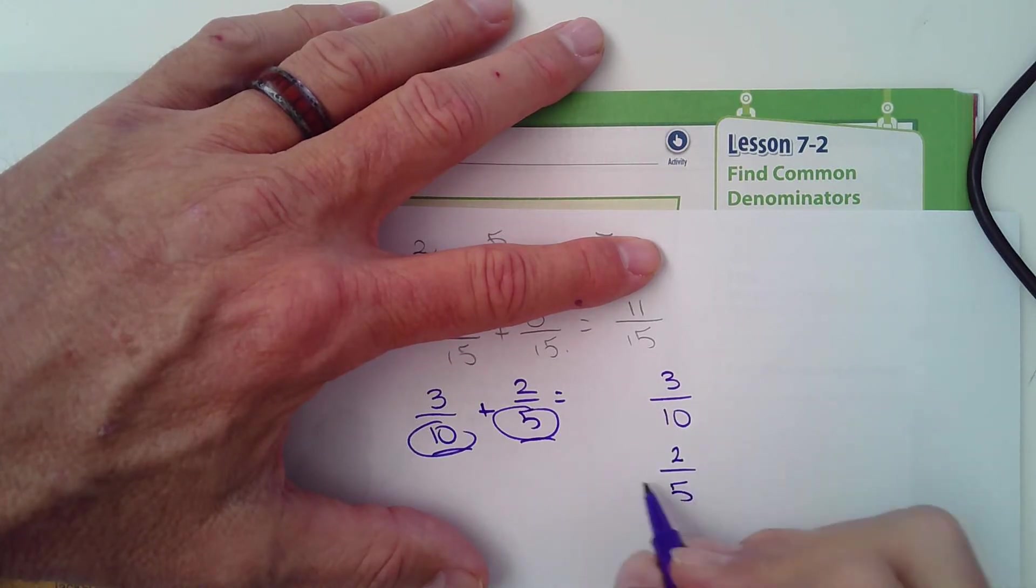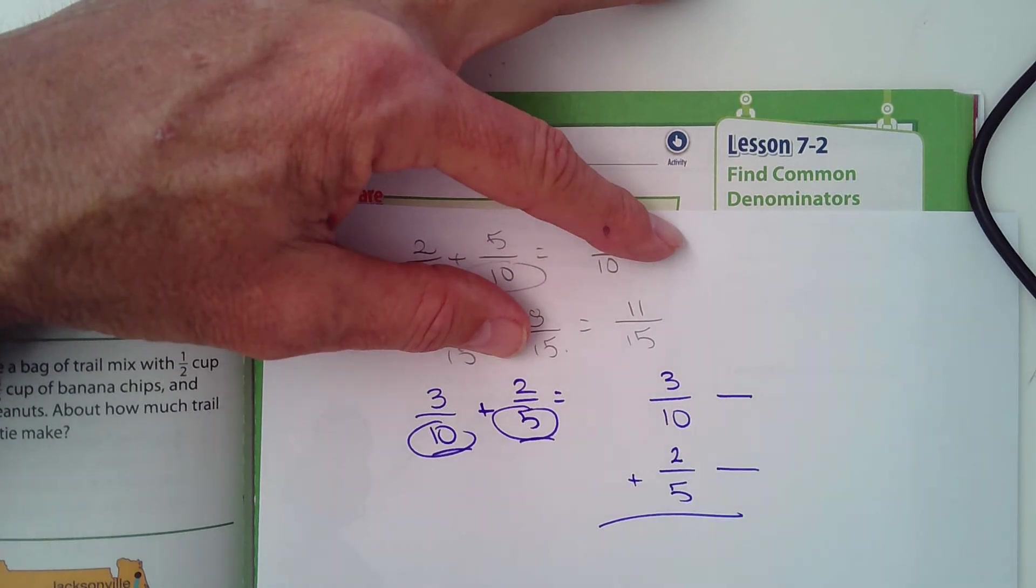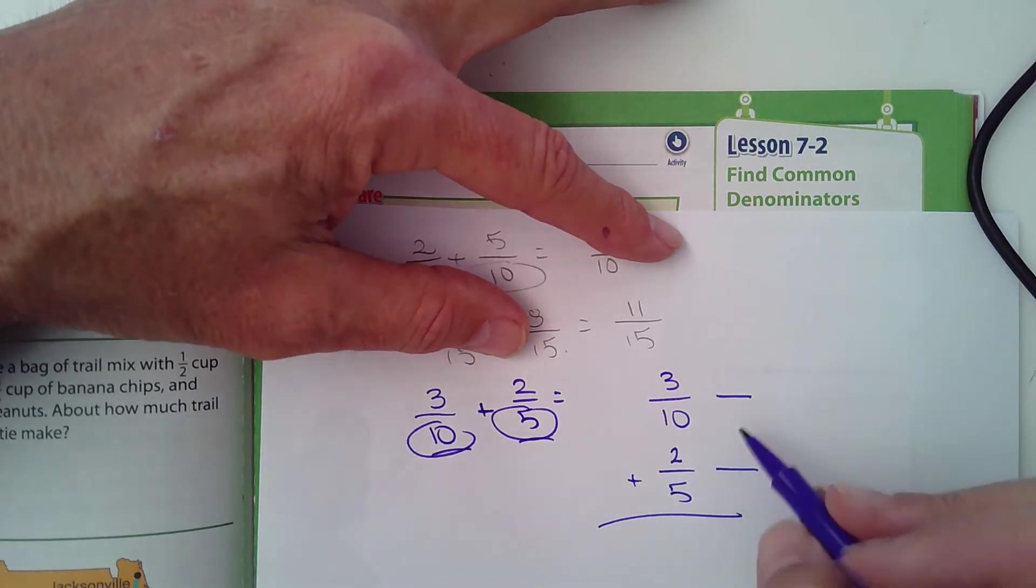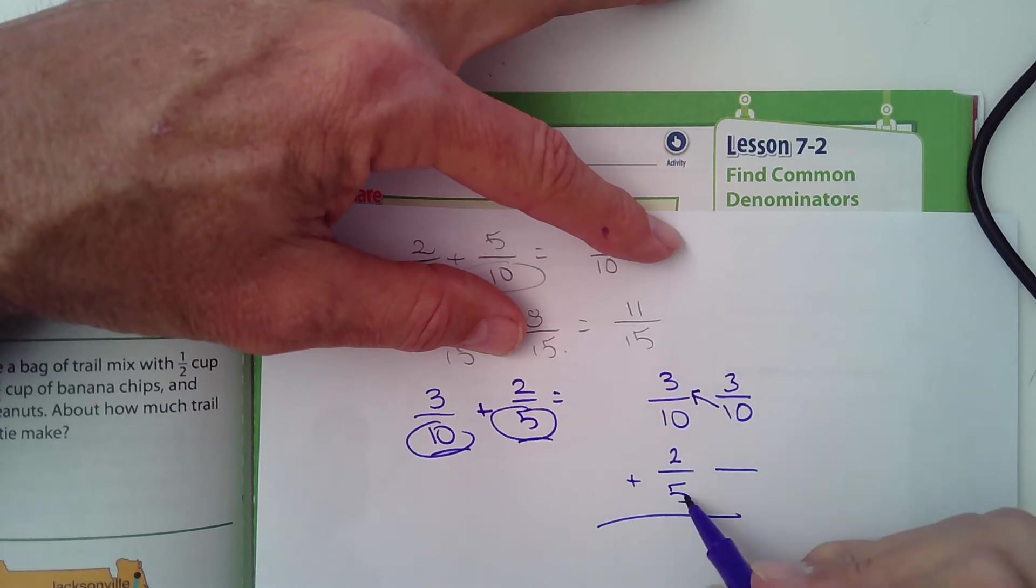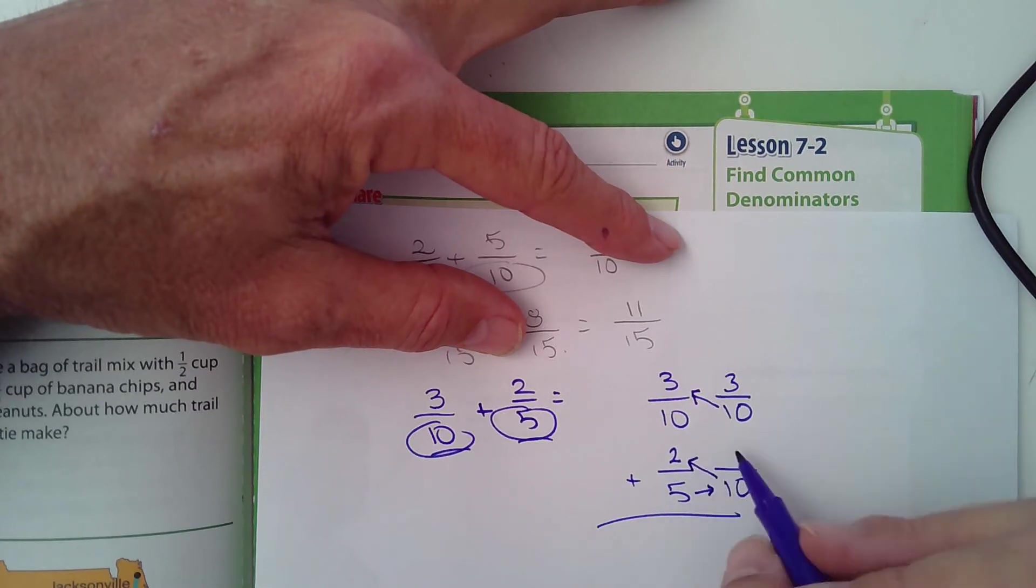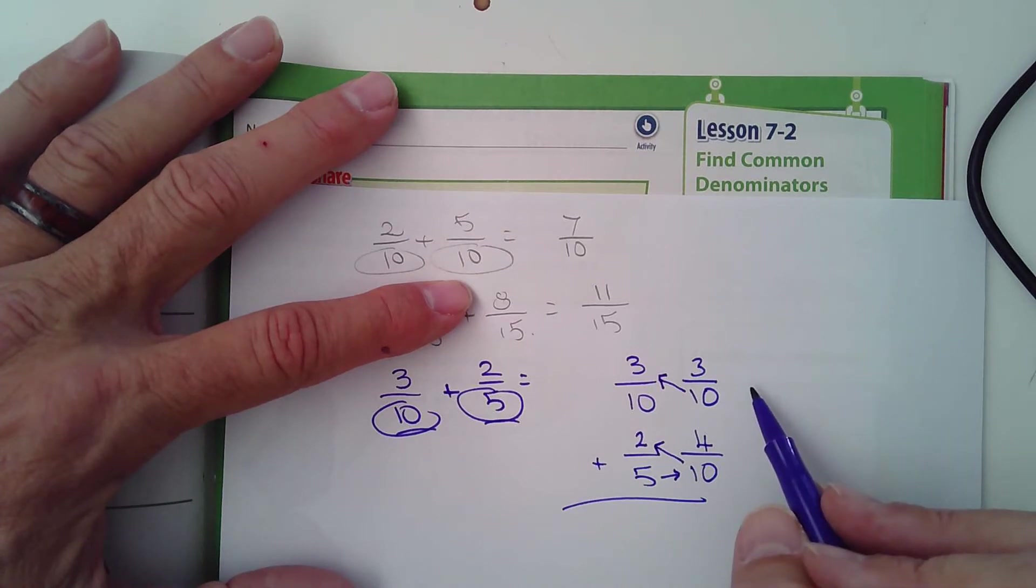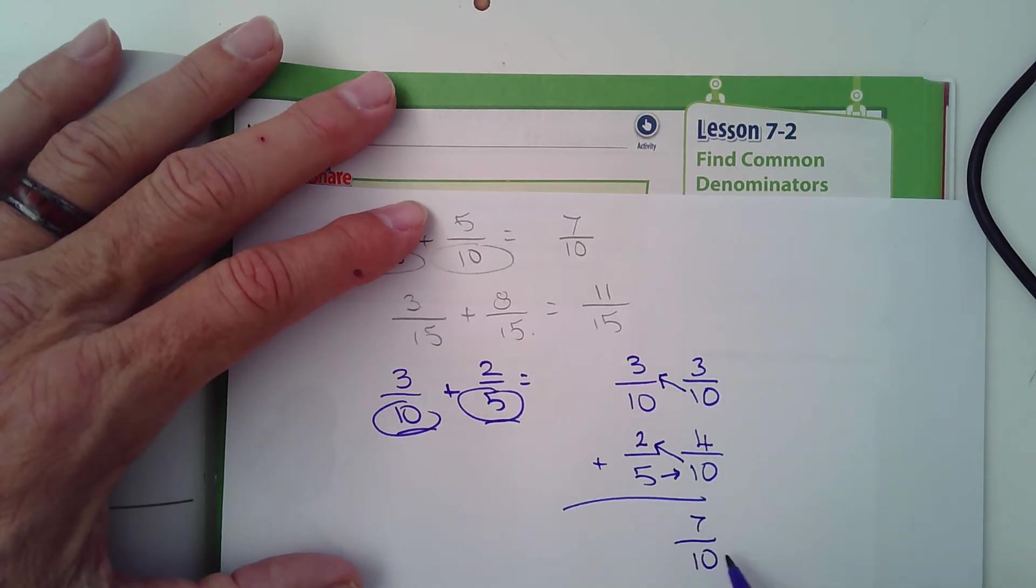I need to come up with a number, a denominator that they both go into. Well, if you look at five and ten and you're trying to think, well, what number could both of them go into? Well, ten would go into itself, so we can use ten. Does five go into ten? Certainly does. So ten goes into ten once, and one times three is three. Five goes into ten twice, and two times two is four.